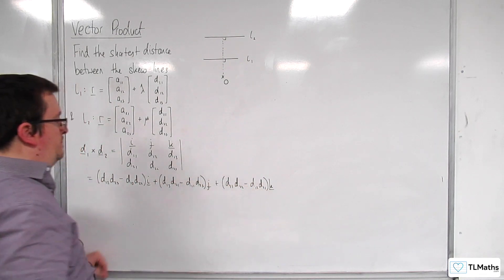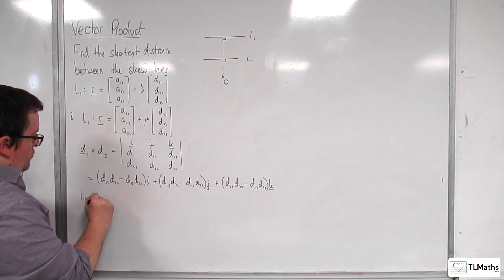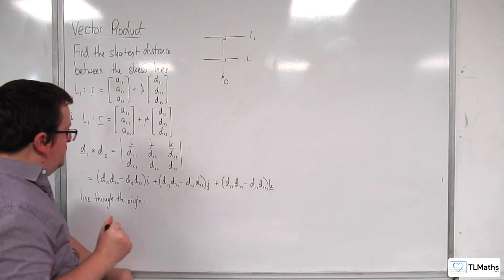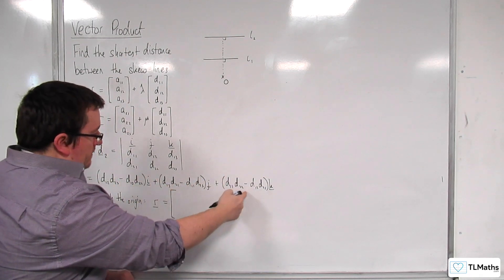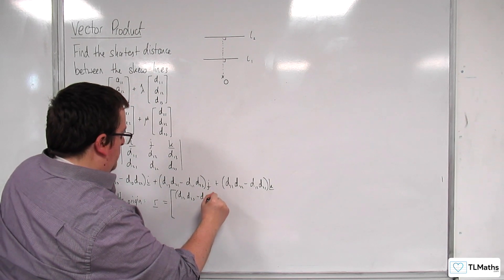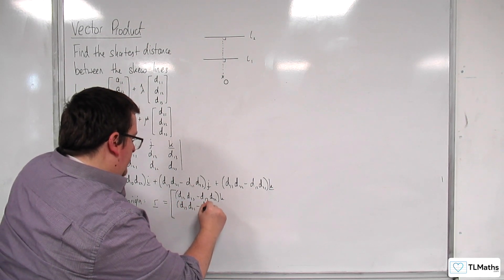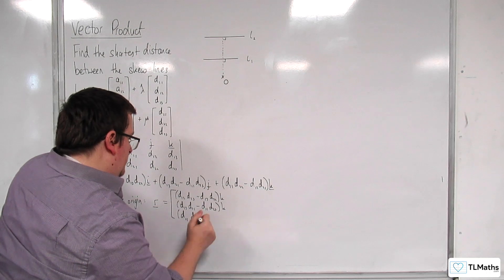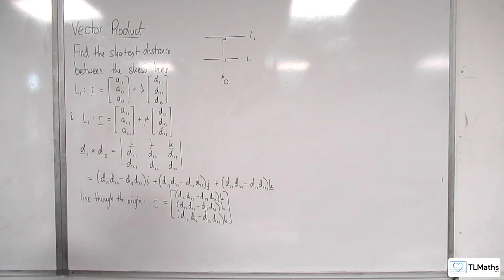So this is a vector perpendicular to both D1 and D2. I want a line going through the origin, so R equals some multiple K of that vector: K·(D12·D23 − D13·D22), K·(D13·D21 − D11·D23), K·(D11·D22 − D12·D21). This is my line going through the origin.